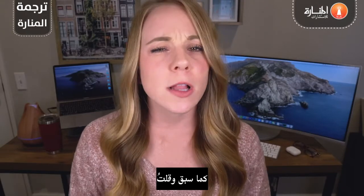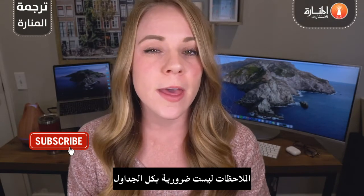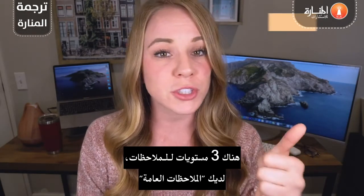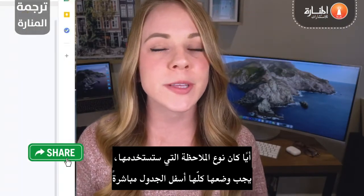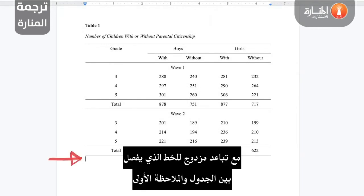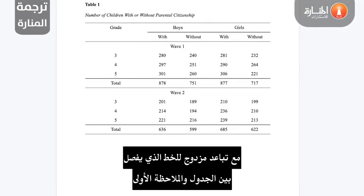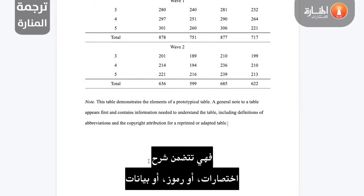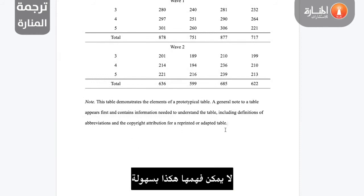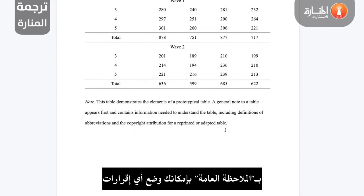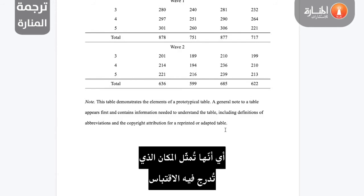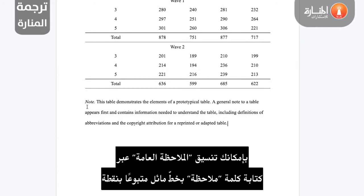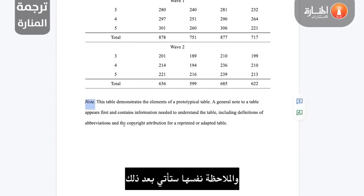The final step is adding in any necessary notes. Not all tables need notes — they're only to be used when something within the table needs further clarifying. When it comes to notes, there are three levels: general notes, specific notes, and probability notes. No matter what type of note you're using, they should all be placed directly underneath the table with one double-spaced line separating the table and the first note. General notes are your first level, and the purpose of them is to explain or provide information relating to your table as a whole — this includes explaining abbreviations, symbols, or data that's not easily understood on its own. The general note is also where you would include any acknowledgement that a table is reprinted from another source, meaning this is where you would include your citation. The way you'd format a general note is by typing the word 'Note' in italic font followed by a period, and the note itself follows after.